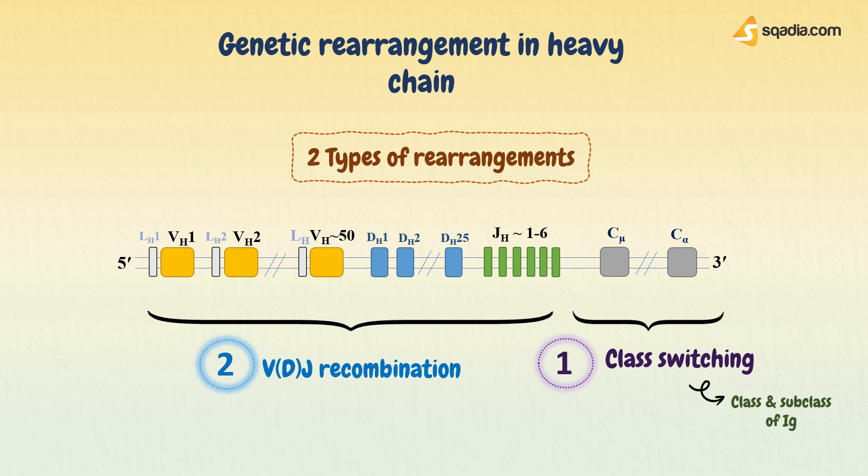The complex of enzymes involved in this process are called VDJ recombinase. Recombination in C-region will determine the class and subclass of immunoglobulin. While VDJ recombination will determine its affinity towards antigen. So both these genetic rearrangements are basically responsible for diversification of antibodies.